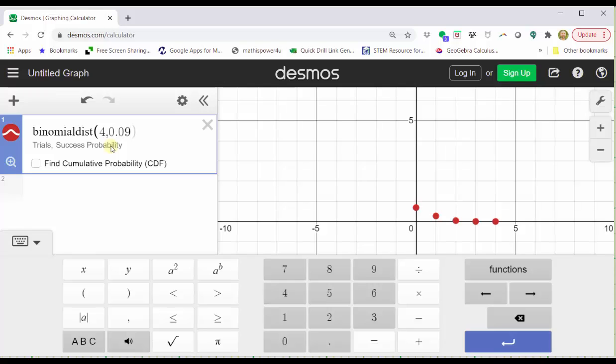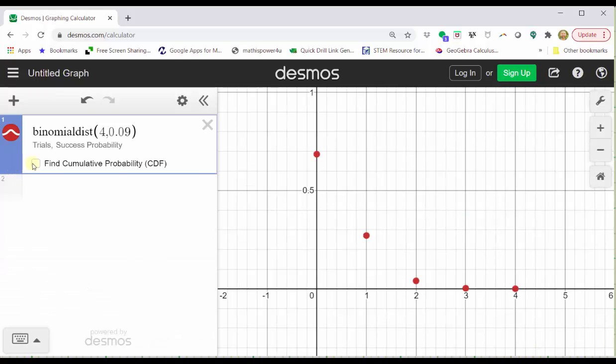Let's click the zoom fit button, which is the magnifying glass here on the left. And on the right, we now have a graph of the probability distribution.